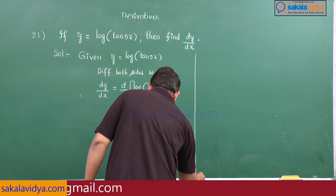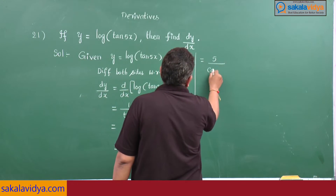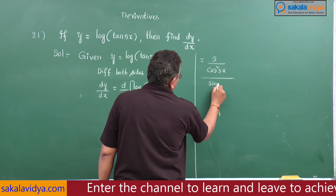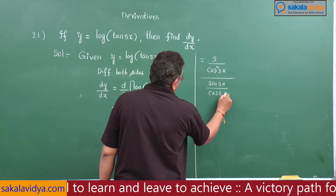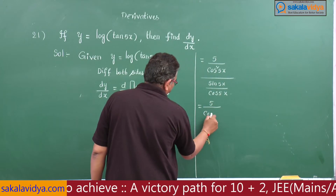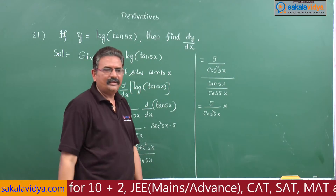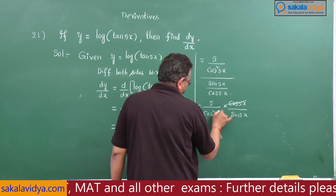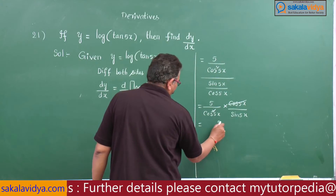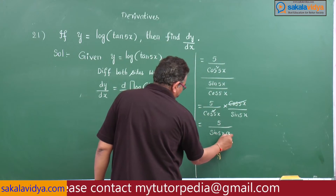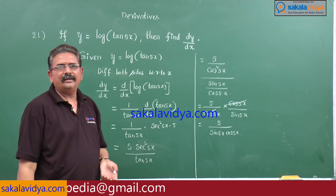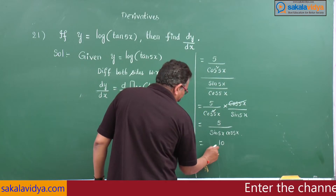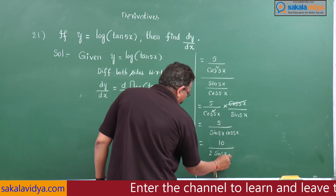This can be written as 5 divided by cos² 5x, upon sin 5x by cos 5x. This equals 5 divided by cos² 5x, multiplied by the reciprocal cos 5x by sin 5x, giving 5 by sin 5x cos 5x. Multiplying numerator and denominator by 2, we get 10 by 2 sin 5x cos 5x.